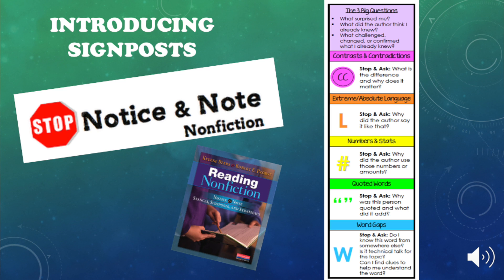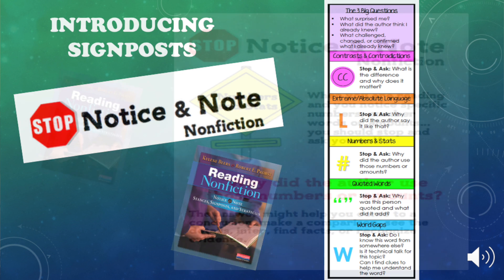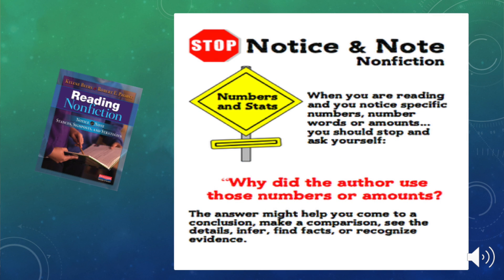The signpost is called Numbers and Stats, and it's just one of the signposts the book discusses. It's really great to use in science and social studies classes because it addresses why does an author use numbers. When you're reading a specific text and you notice specific numbers, number words, or amounts, students should stop and ask themselves: why did the author use those numbers or amounts? This really helps them come to a conclusion or make a comparison, infer, find specific facts, and recognize evidence.